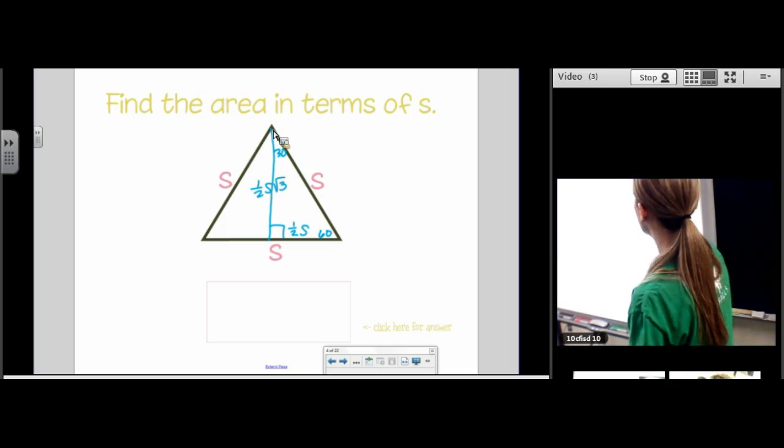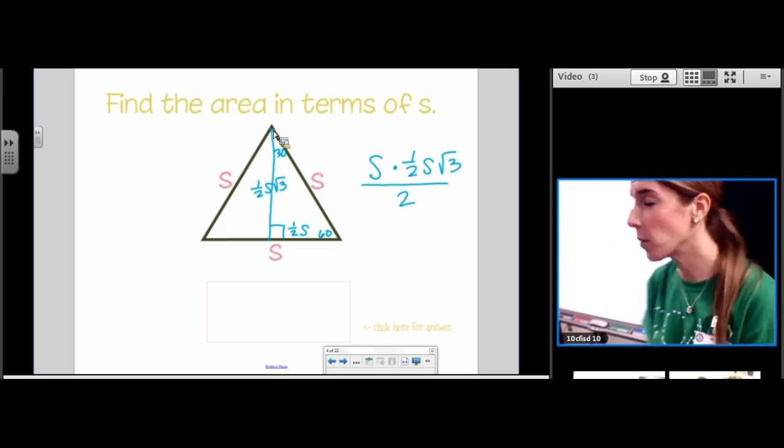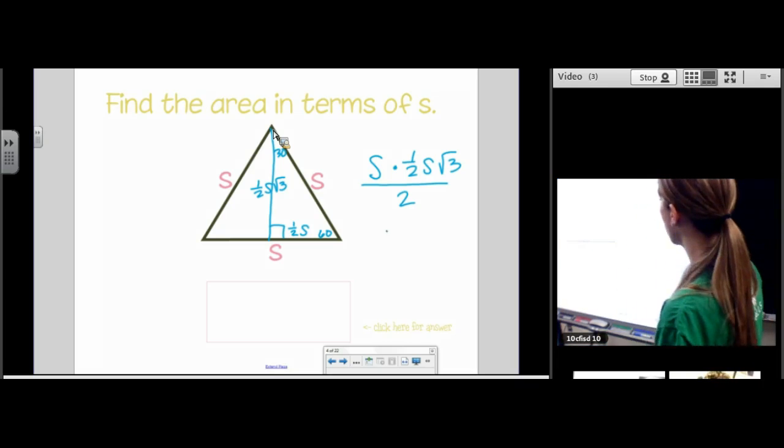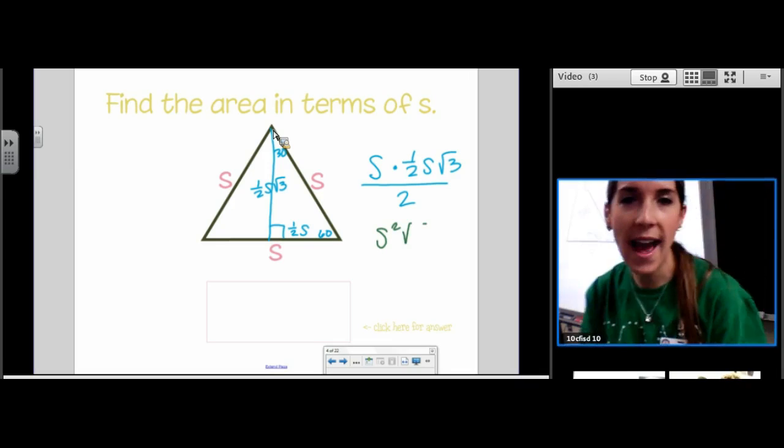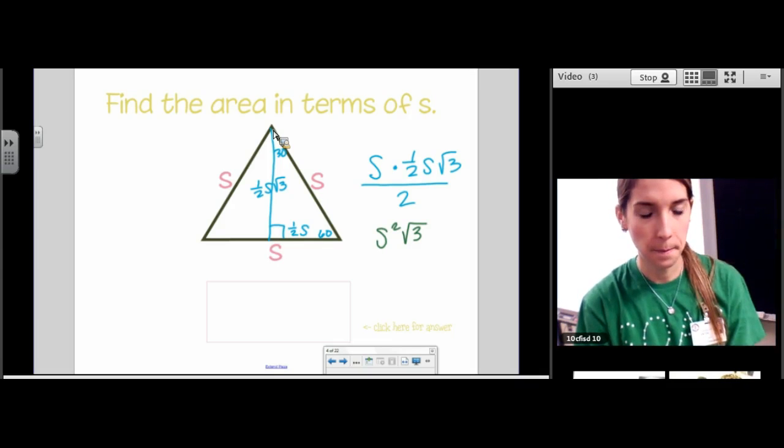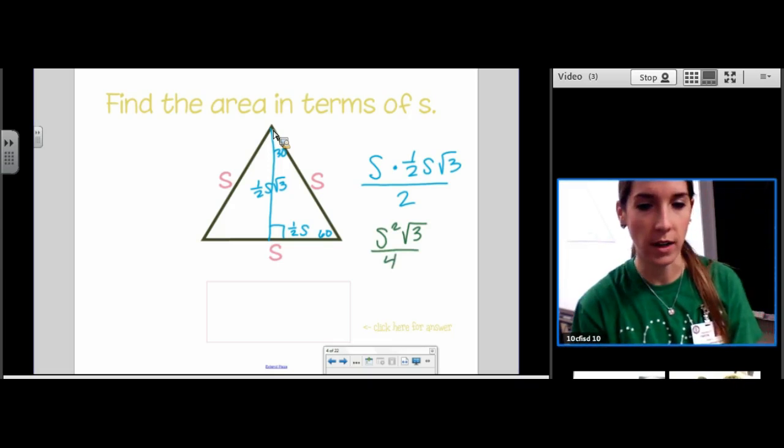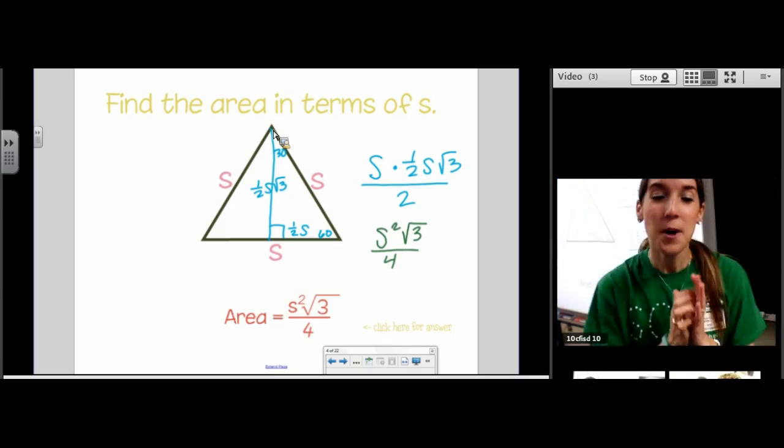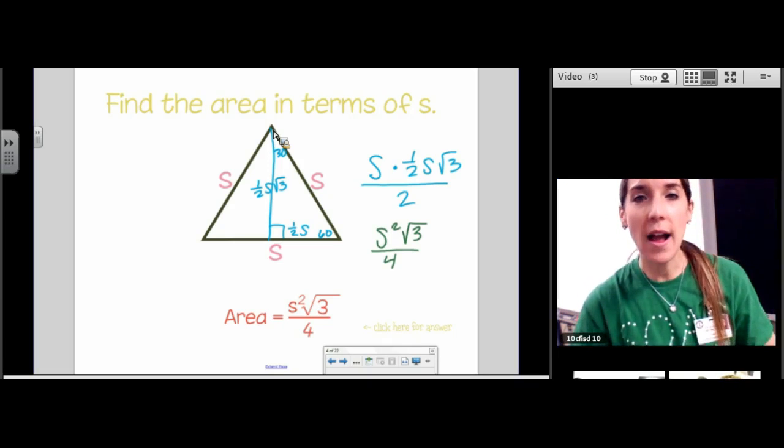Now we're going to do base times height divided by 2. And then we're going to clean it up and we're going to have a formula. A formula that you can use every time you have an equilateral triangle. S times S is S squared.